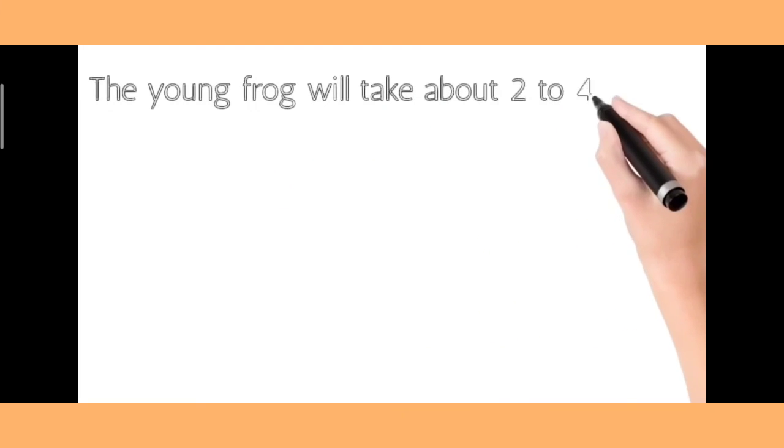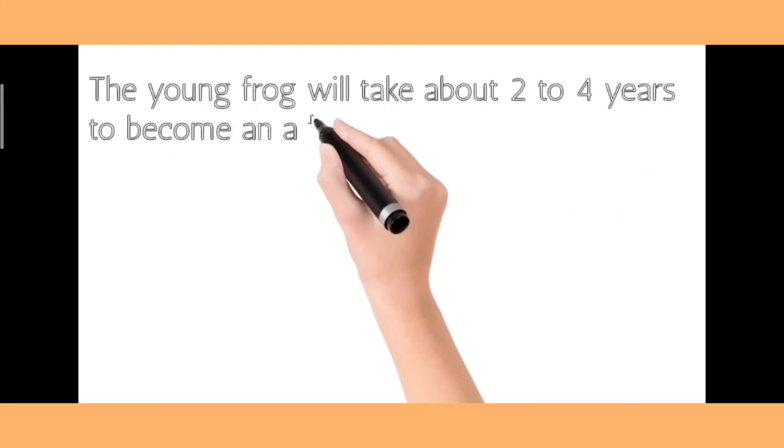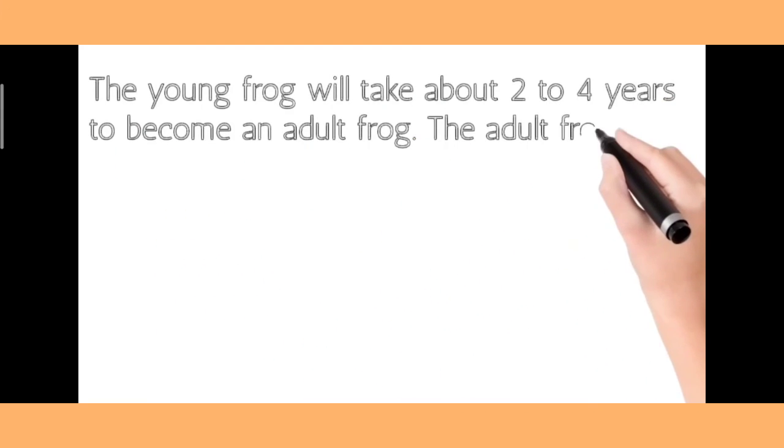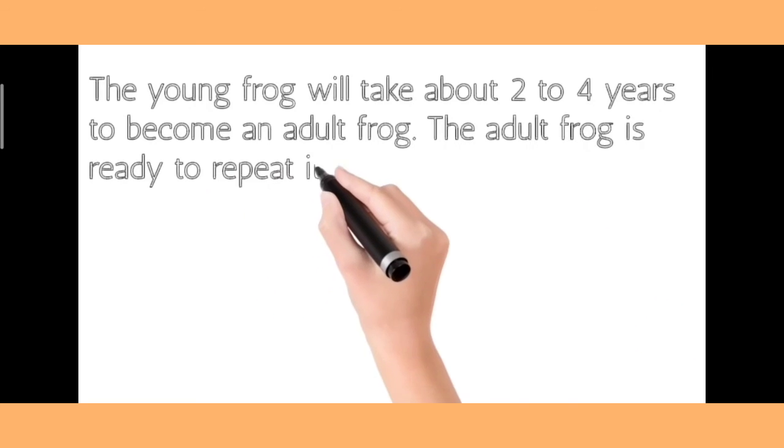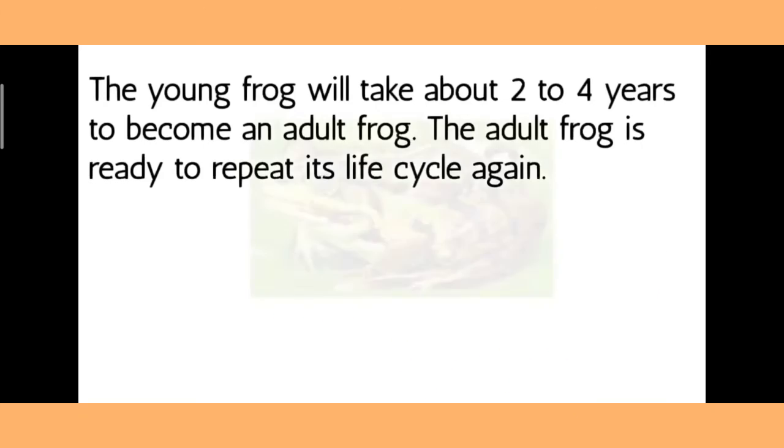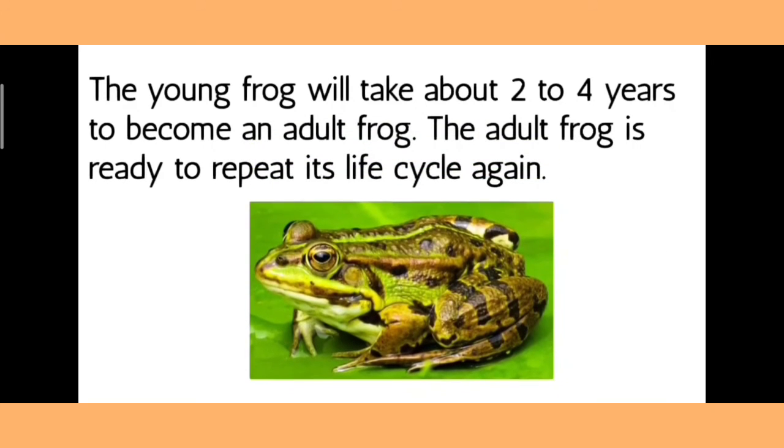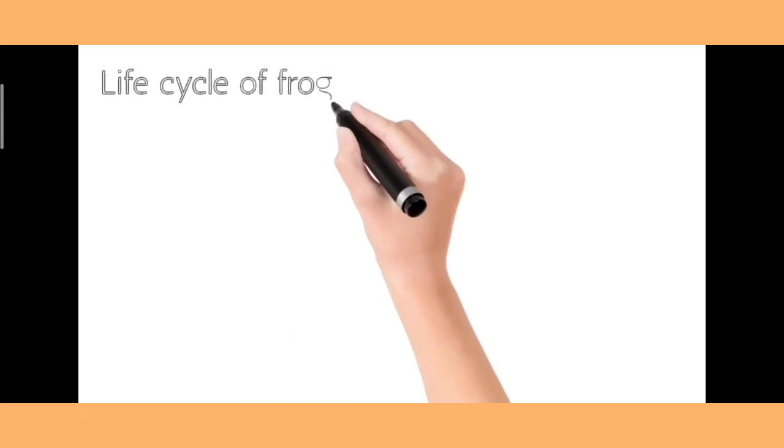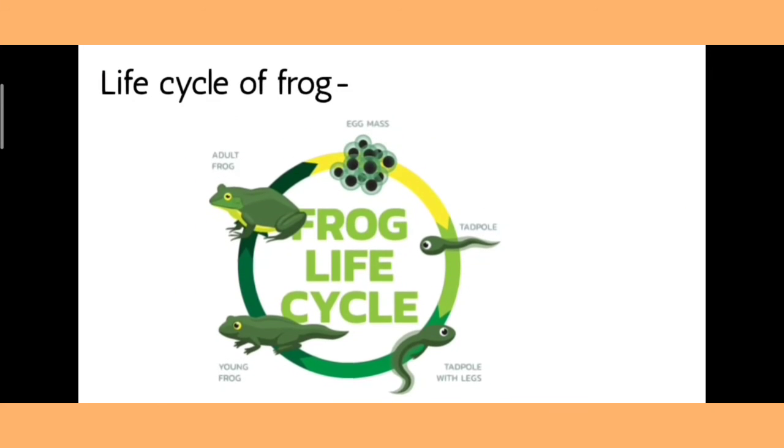The young frog will take about two to four years to become an adult frog. The adult frog is ready to repeat its life cycle again. Cyclic diagram of life cycle of frog.